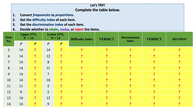Follow the remaining steps in item analysis: 1. Convert frequencies to proportions. 2. Get the difficulty index of each item. 3. Get the discrimination index of each item. 4. Decide whether to retain, revise, or reject the items.